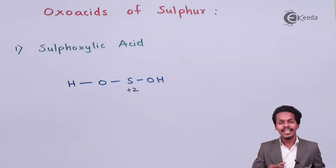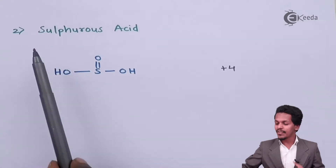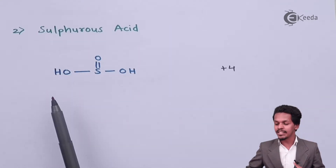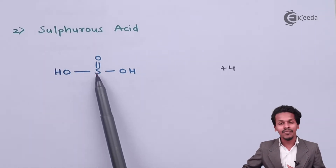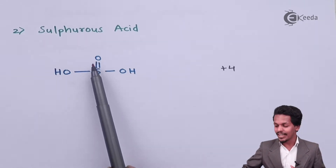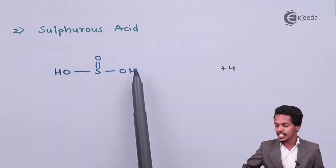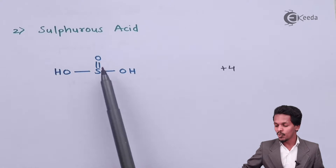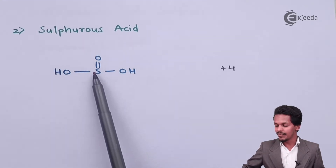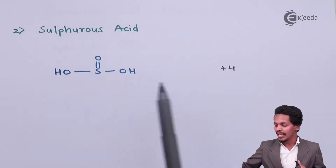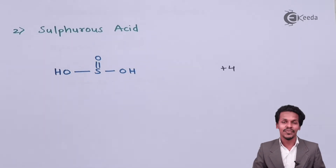Now let us move on to the next one: sulfurous acid, which is H₂SO₃. In this structure, sulfur is attached to one oxygen atom with a double bond, and the remaining two valencies of sulfur are satisfied by two OH groups. The oxidation state of sulfur here is +4.